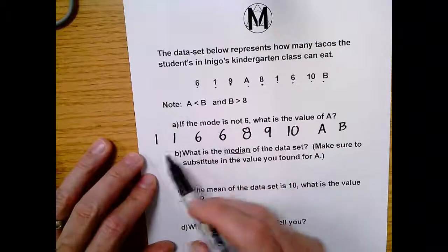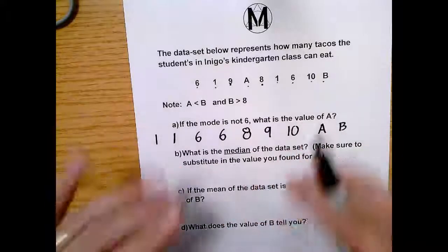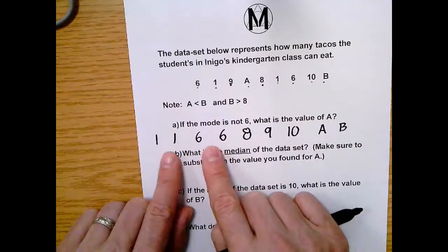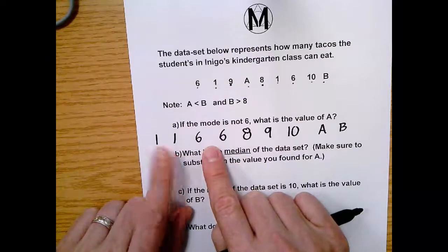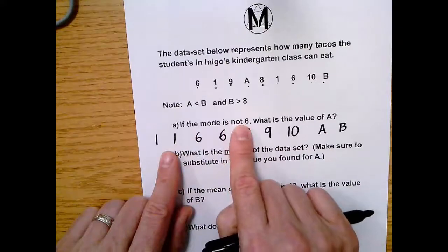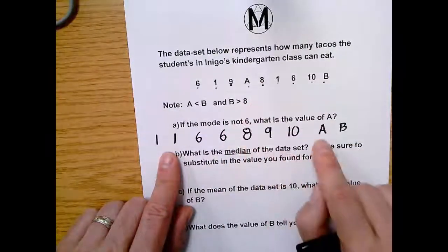Okie, so the mode is whatever, whichever data point comes up the most. Mode, most, mode, most. Okie, so looking here, right now, mode is tied. Our mode right now, as it stands, is one and six. But the question says, hey, you know what? The mode is not six.